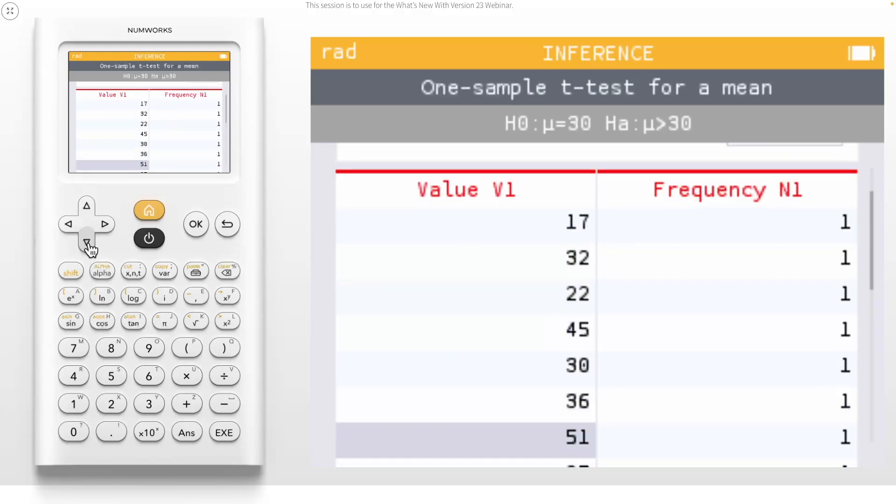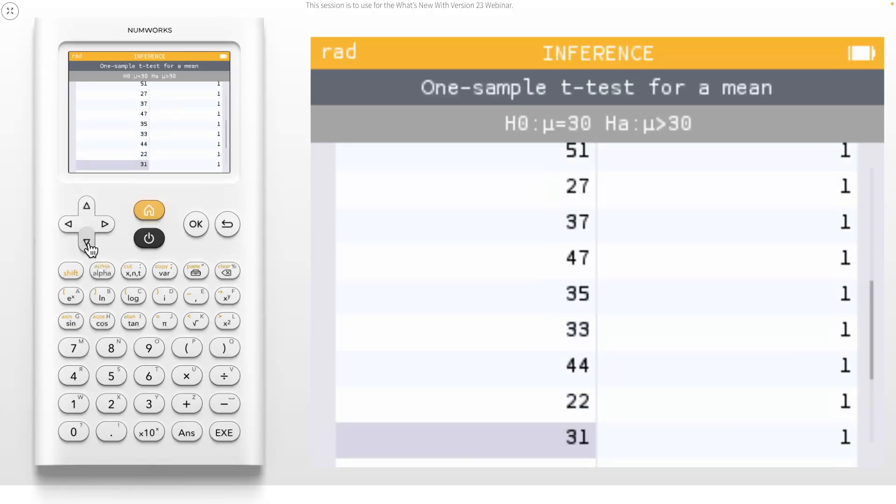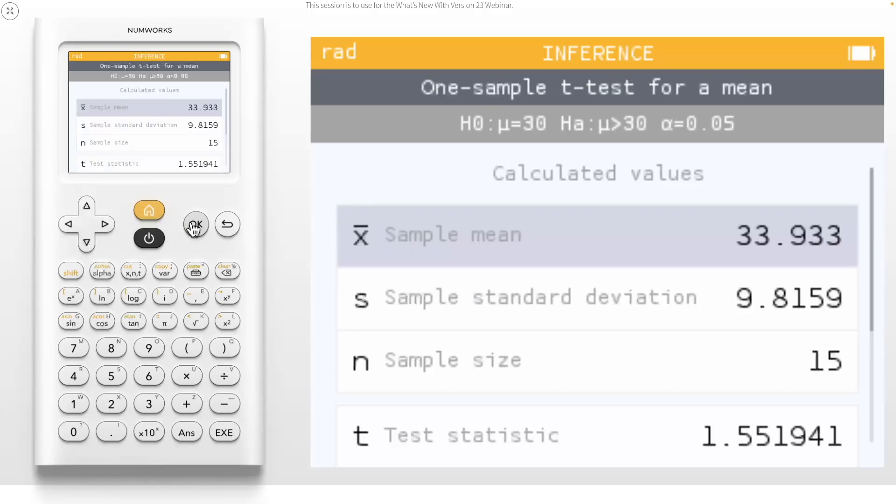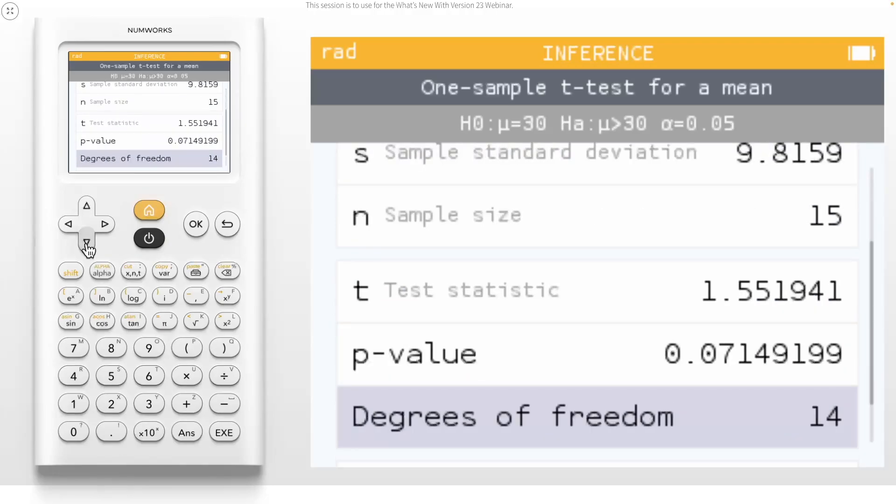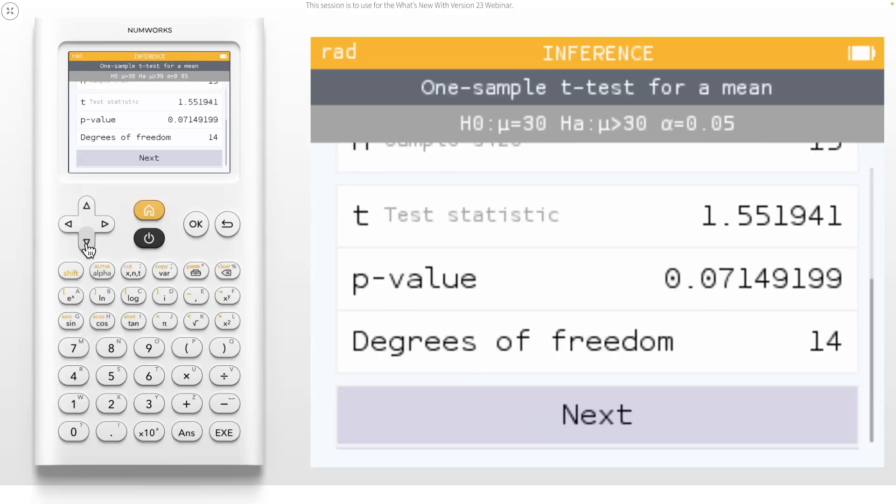Once you have your data ready, you can scroll to the bottom to select Next, and the required values have been calculated automatically using my data set, including the sample mean, sample standard deviation, sample size, test statistic, p-value, and degrees of freedom. Scrolling down to Next here will reveal the visual representation our statistics users have always loved.